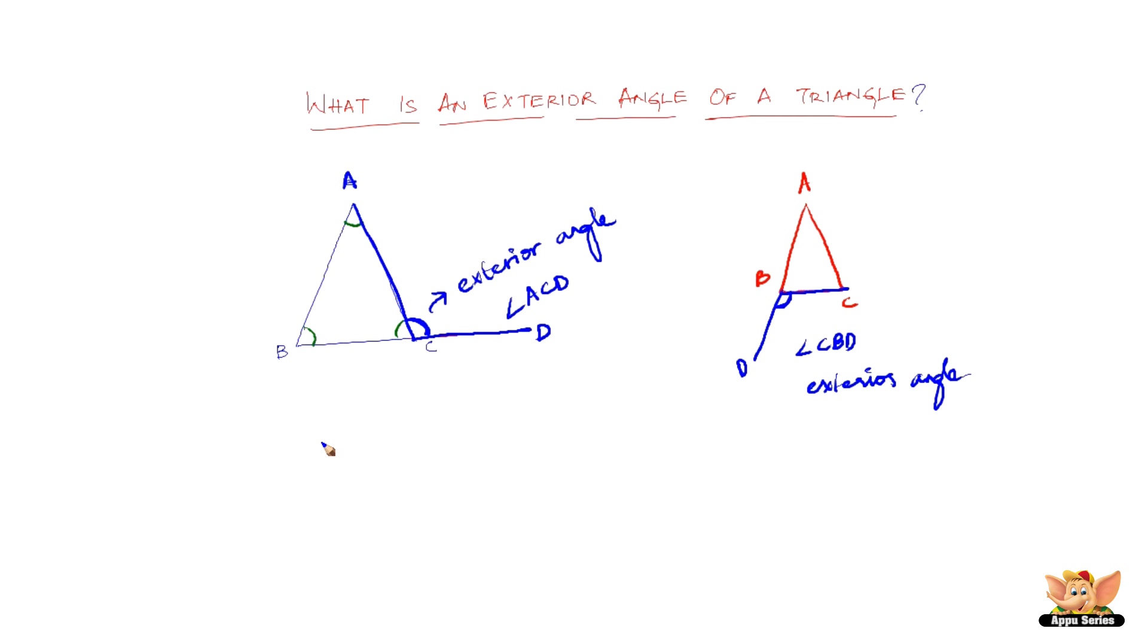So an exterior angle of a triangle is nothing but, whenever you produce a side of a triangle to outside the triangle, the angle that makes, that extended side makes with another adjacent side is called as the exterior angle.